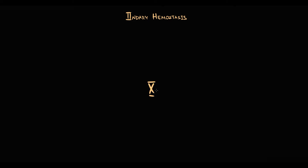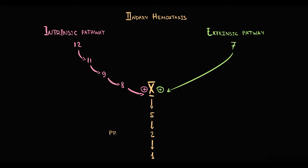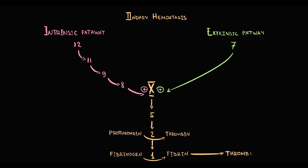The central factor of the coagulation cascade is factor 10. The goal of both the intrinsic and extrinsic coagulation pathways is to activate factor 10. The intrinsic pathway consists of factors 12 to 8, and the extrinsic pathway consists of just factor 7. Activation of factor 10 results in activation of factors 5, 2, and 1. Factor 2 is called prothrombin, which with activation becomes thrombin. Factor 1 is called fibrinogen, which with activation becomes fibrin. And exactly fibrin makes from a platelet plug a formidable thrombus.